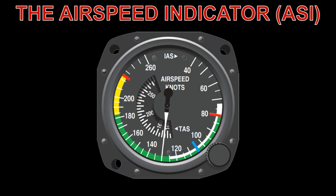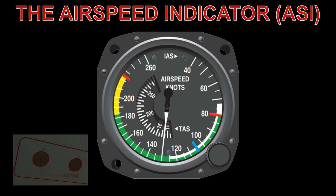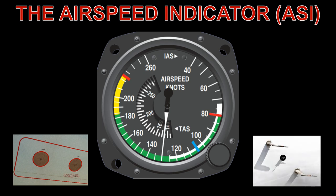The Airspeed Indicator, ASI, is a flight instrument that indicates the airspeed of an aircraft, usually in knots. The ASI measures the pressure differential between static pressure from the static port and total pressure from the pitot tube.